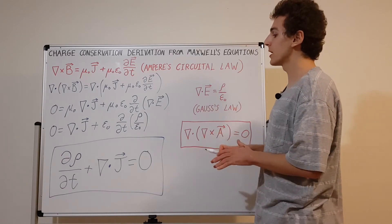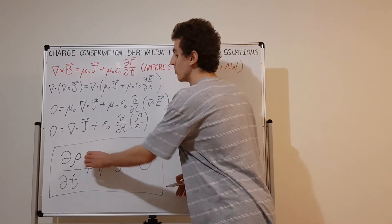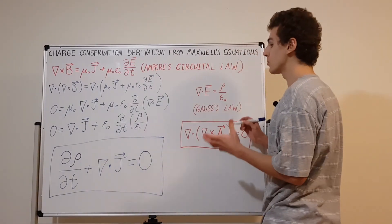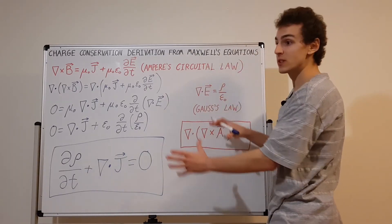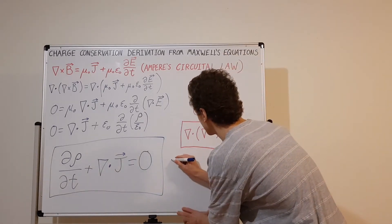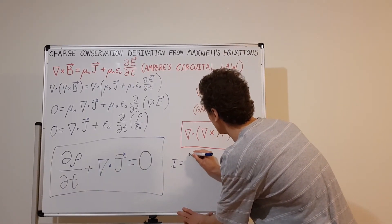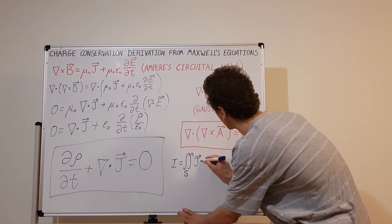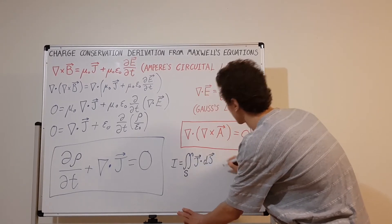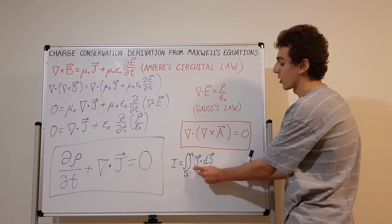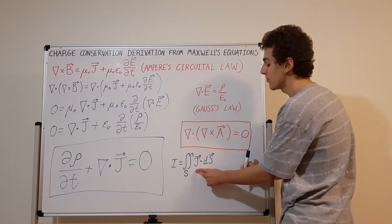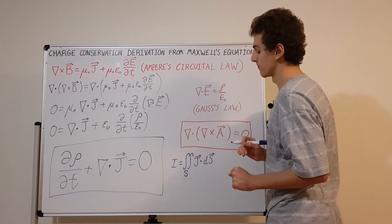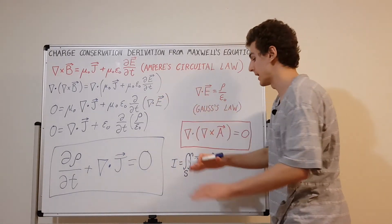J is the electric current density vector. We can write J in terms of a surface integral: the current I in amps equals the surface integral over some surface S of J dotted with dS. This is the surface integral of the current density vector — taking the dot product as it passes through a surface gives the current flowing through that surface.